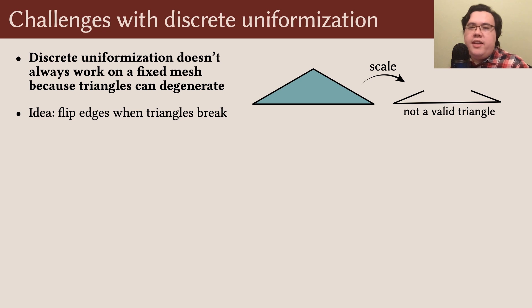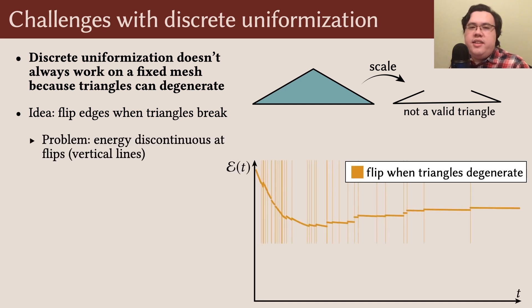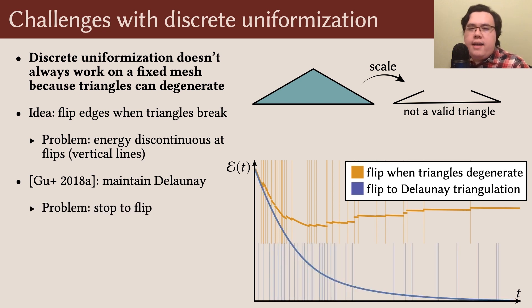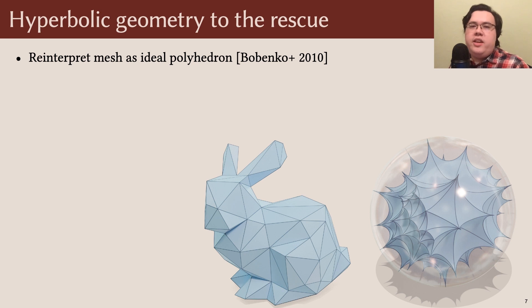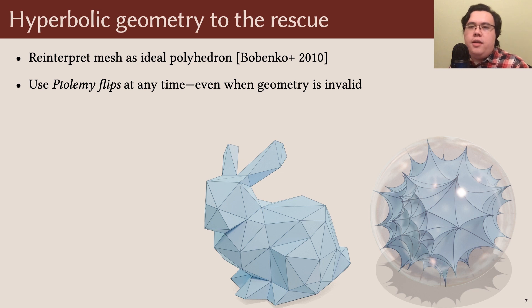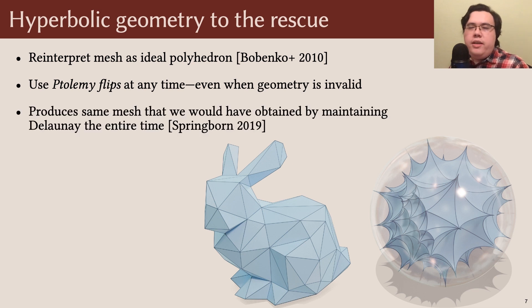Luo originally suggested handling this by flipping an edge at the moment when a triangle degenerates, but this causes discontinuous jumps in the energy, voiding any convergence guarantees. Later, Gu and colleagues proposed flipping edges to maintain a Delaunay triangulation instead, which keeps the energy smooth, but requires pausing the flow at exactly the right time to flip. We instead pursue an alternative strategy enabled by hyperbolic geometry. The main idea, proposed by Bobanko and colleagues, is to reinterpret our triangle mesh as an ideal polyhedron. This leads to a rich alternative perspective on what it means for meshes to be conformally equivalent. The upshot is that whenever we flip an edge, we compute its new length using Ptolemy's formula. We can do so at any time, even when the triangle inequality doesn't hold and the Euclidean edge flip is undefined. Importantly, flipping to Delaunay with Ptolemy flips always produces the exact same mesh that we would have obtained if we'd stopped during scaling to maintain a Delaunay triangulation the entire time.